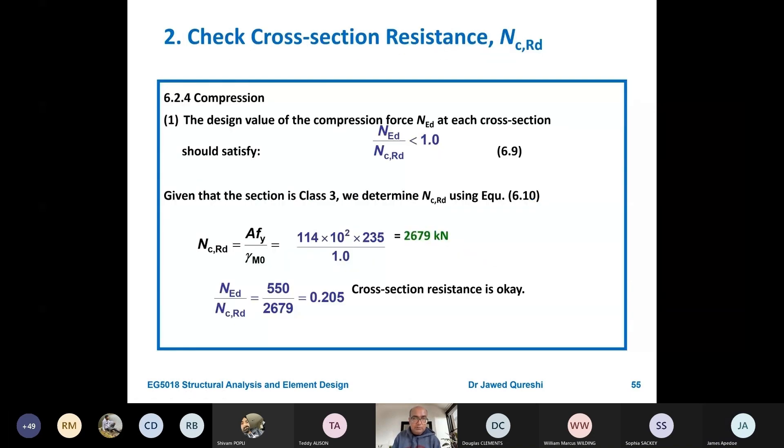After that I have to work out the compressive resistance. Compressive resistance is similar to what we did in tensile resistance. Simply multiply area, but don't forget to convert it into millimeter square, and then multiply it with F_Y. And then multiply everything with 10 raised to minus 3 to convert it into kilonewtons. If you put these values over here, then you're getting N_ED over N_C,RD as 0.2. This means that the section is okay in terms of compressive resistance.